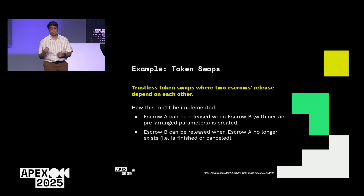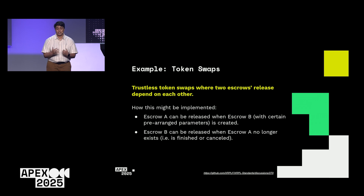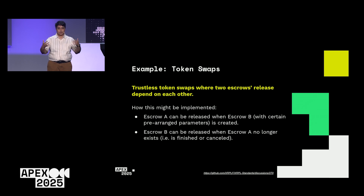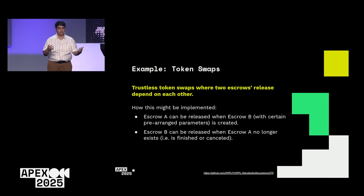Our third example: token swaps. This is a trustless token swap where the escrows' releases depend on each other. One way to implement this: escrow A can only be released once escrow B is created, so both escrows exist. You can release escrow A once escrow B is created, and escrow B can only be finished once escrow A is finished. That's one way to link the two together.